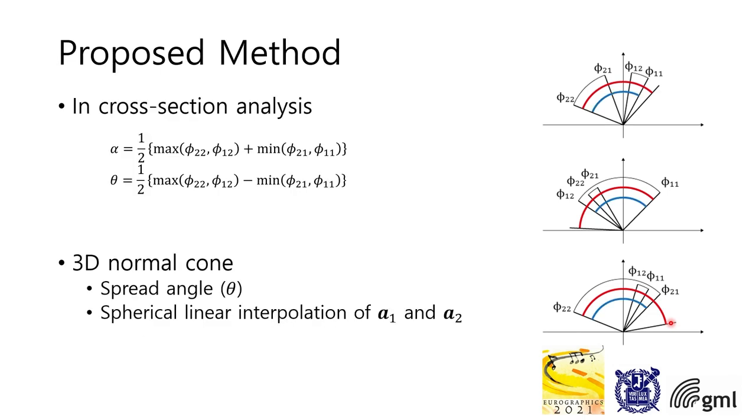So we propose a new simple merging method by constructing tighter cones which have no unnecessary space. In cross-section, as I mentioned above, a 3D cone can be expressed as a range of angles.